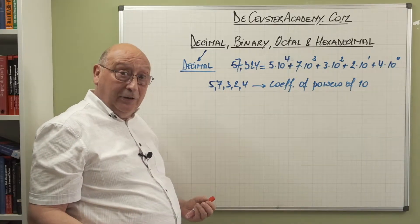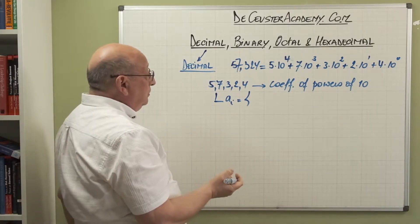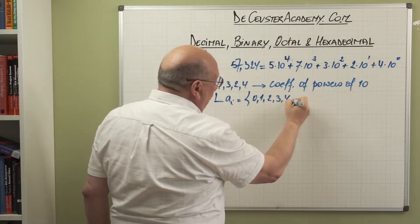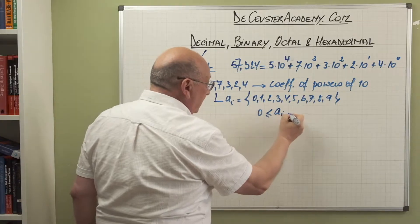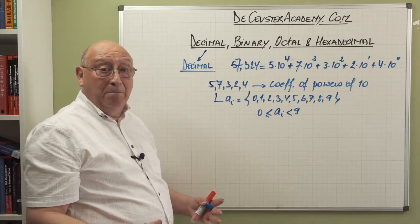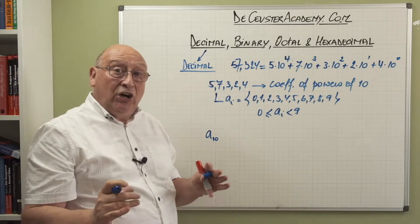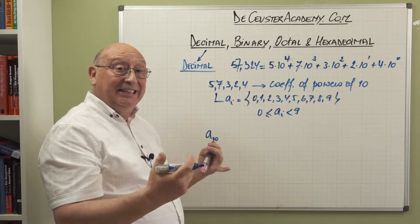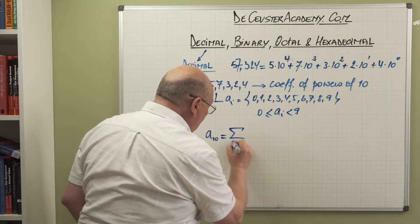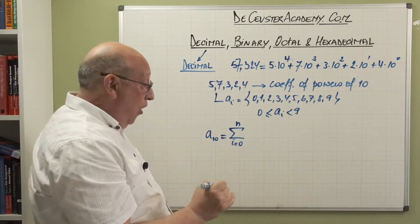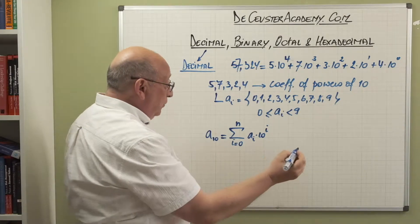We do this so naturally every day that we don't think about it. We call the coefficients a_i, and for the decimal notation they range from 0, 1, 2, 3, 4, 5, 6, 7, 8, and 9 — so we have 10 coefficients, or a_i is between 0 and 9. Basically, any number in base 10 can be written as a summation: the sum for i going from 0 to n of a_i multiplied by 10 to the power i.